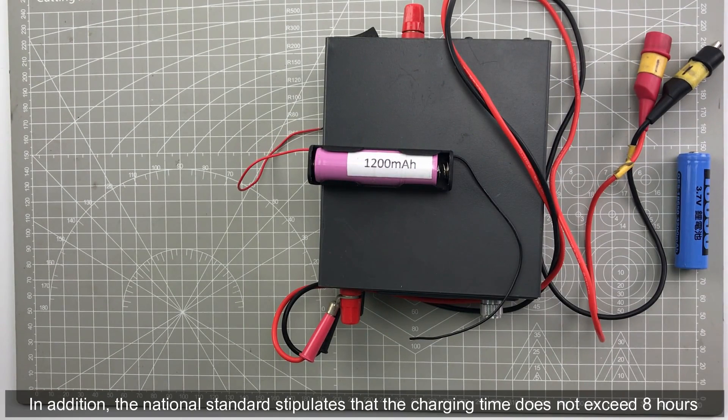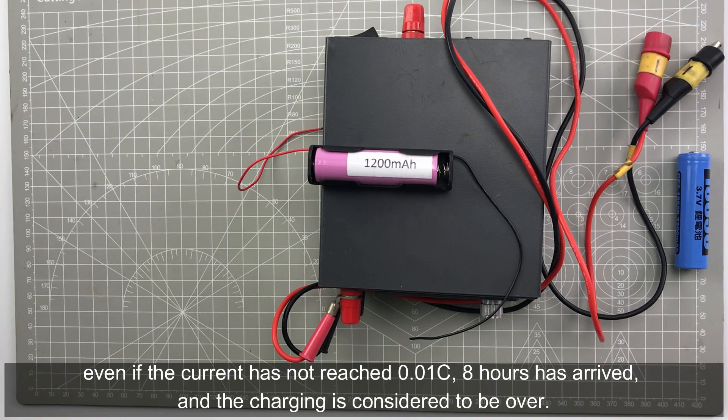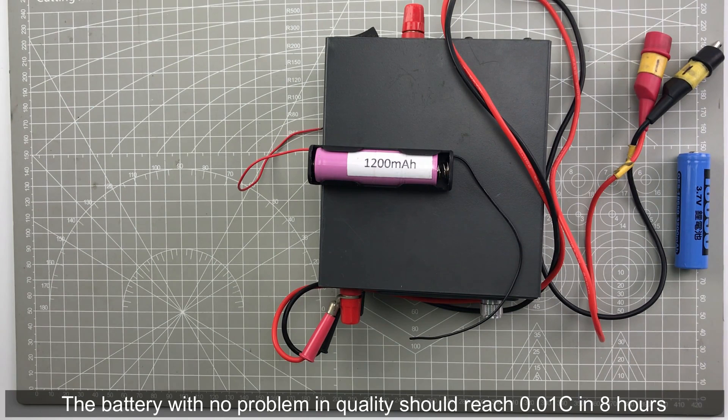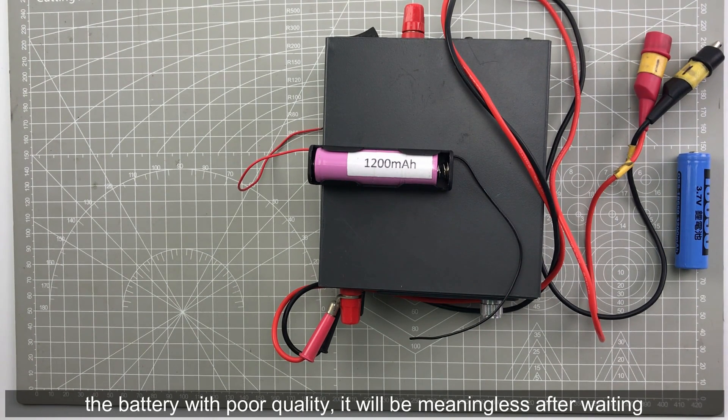In addition, the national standard tells us the charging time does not exceed 8 hours, which means even if the current has not reached 1% CE and 8 hours arrived, the charging progress is considered to be over. If the battery has no problem in quality, it should reach 1% CE in 8 hours. The battery with poor quality will be meaningless after 8 hours.